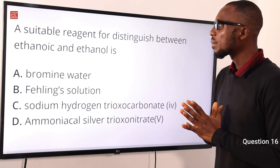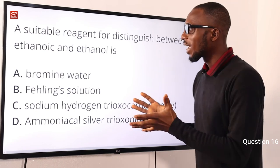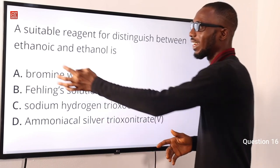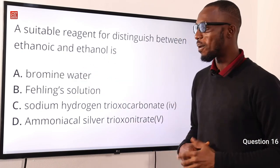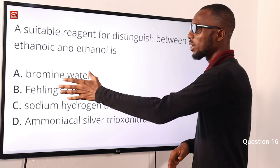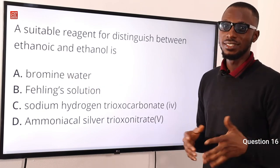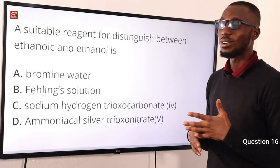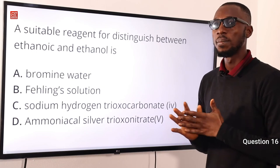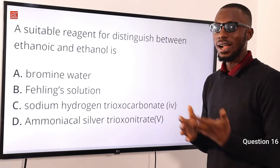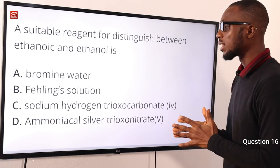Question 16. A suitable reagent for distinguishing between ethanoic acid and ethanol is what? Ethanoic acid is a weak acid and ethanol is an alcohol. Bromine water is used to test for ethene to show it is unsaturated. Fehling's solution is used to distinguish between alkanals and alkanones. Sodium hydrogen carbonate dissolved in water gives an alkaline solution.